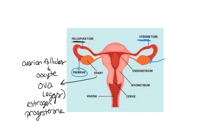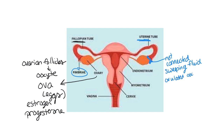The ovary and the fimbriae are not connected. Those fimbriae are sweeping — remember, all the cells in our body are surrounded by fluid. So the fimbriae, these little finger projections at the end of the uterine tube, are constantly sweeping that fluid. That's what's going to make the ovulated oocyte be swept up into the uterine tube so that the egg can then travel down the tube towards the uterus.